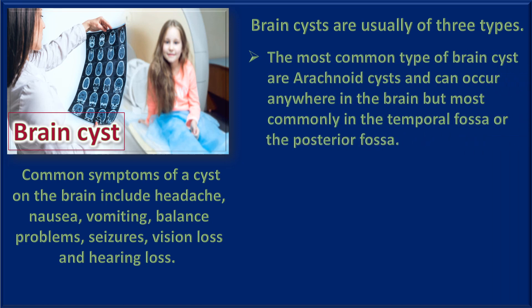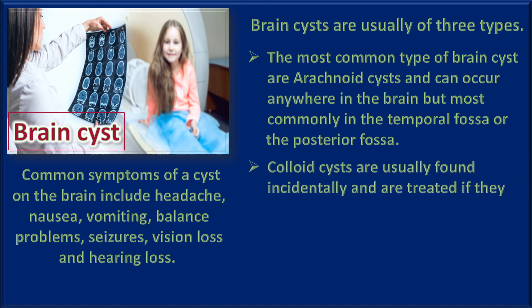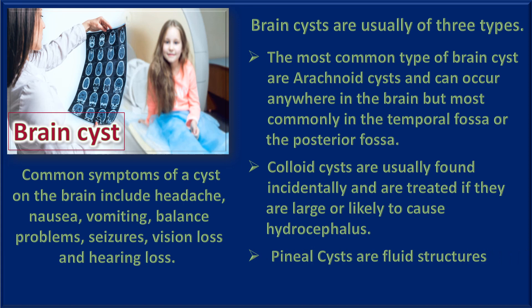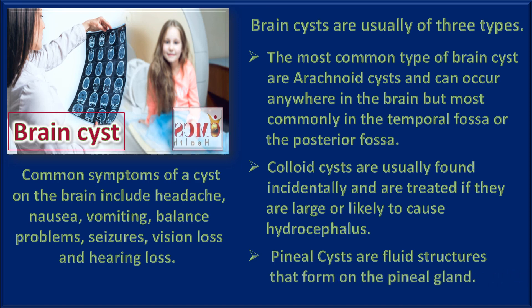Brain cysts are usually of three types. The most common type are arachnoid cysts, which can occur anywhere in the brain but most commonly in the temporal fossa or the posterior fossa. Colloid cysts are usually found incidentally and are treated if they are large or likely to cause hydrocephalus, that is accumulation of water in the brain. Pineal cysts are fluid structures that form on the pineal gland.